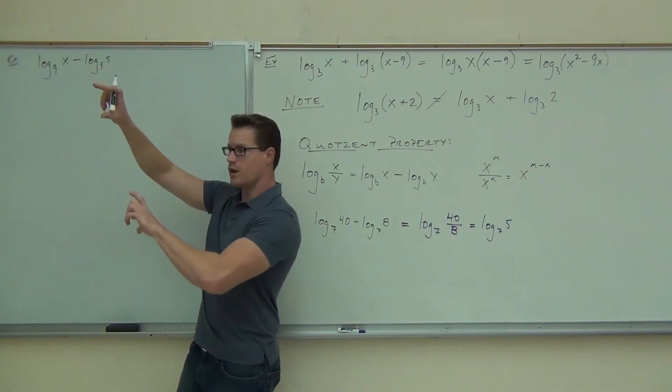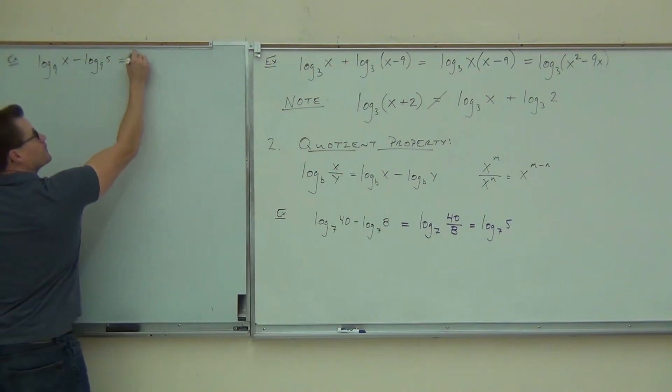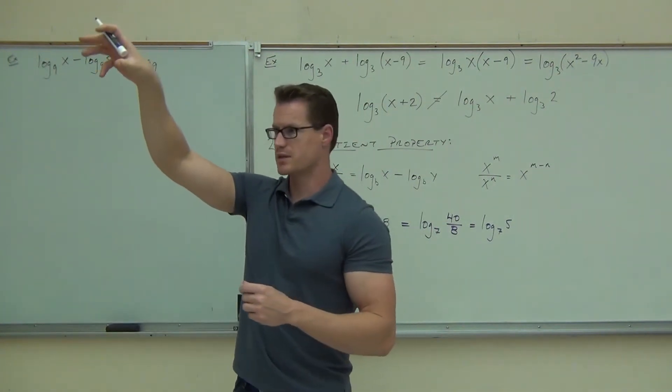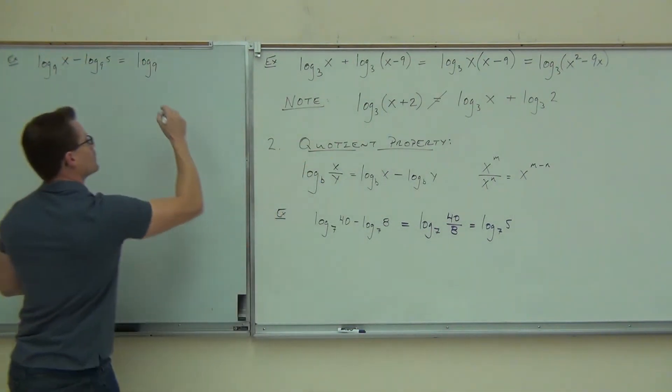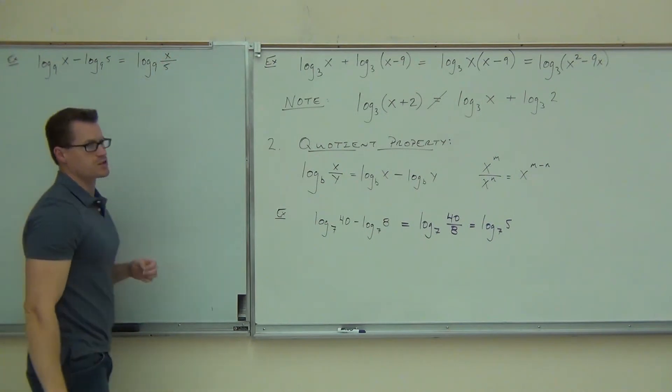Dividing. Now, is it going to be a log over a log or one log? One log. Sure. So we're going to have one log base 9. And then we'll have a fraction. We have our first logarithm on the numerator, whatever the inside of that logarithm is, over the second logarithm, which is 5 in this case, x over 5.